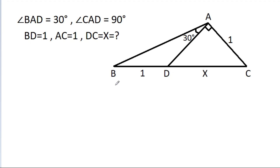In this video, we have given that angle BAD is 30 degrees, angle CAD is 90 degrees, BD is 1, AC is 1, and we have to find DC, that is X.